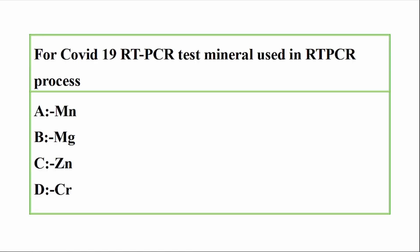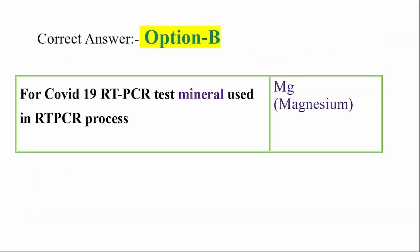Question: For COVID-19 RT-PCR test, which mineral is used in the RT-PCR process? Options: Mn (Manganese), Mg (Magnesium), Cr (Chromium). Correct answer: Option B — Mg, Magnesium. For COVID-19 RT-PCR test, the mineral used in the RT-PCR process is Mg, Magnesium.